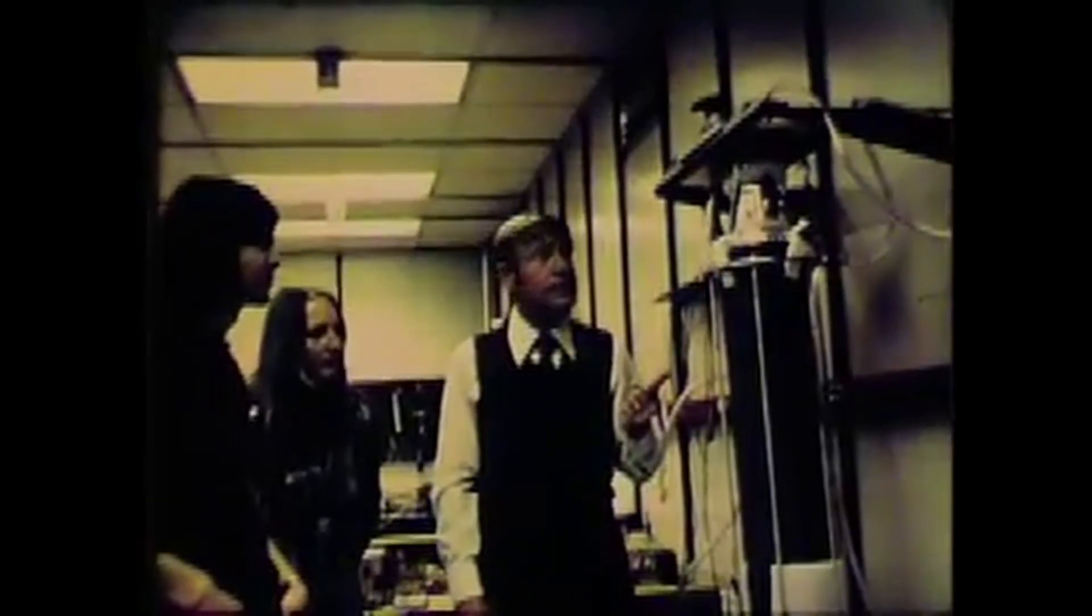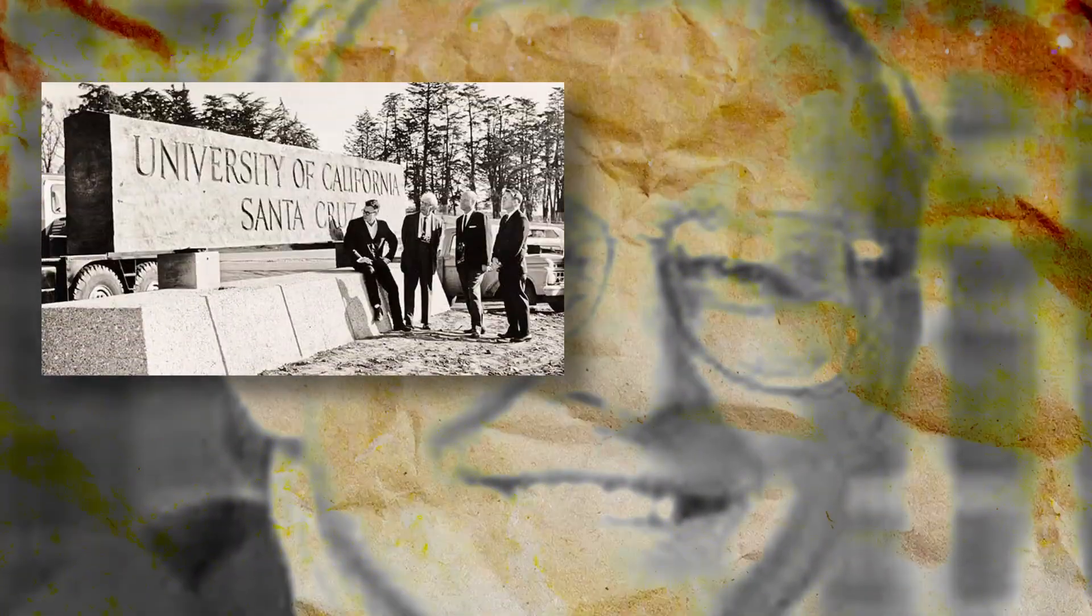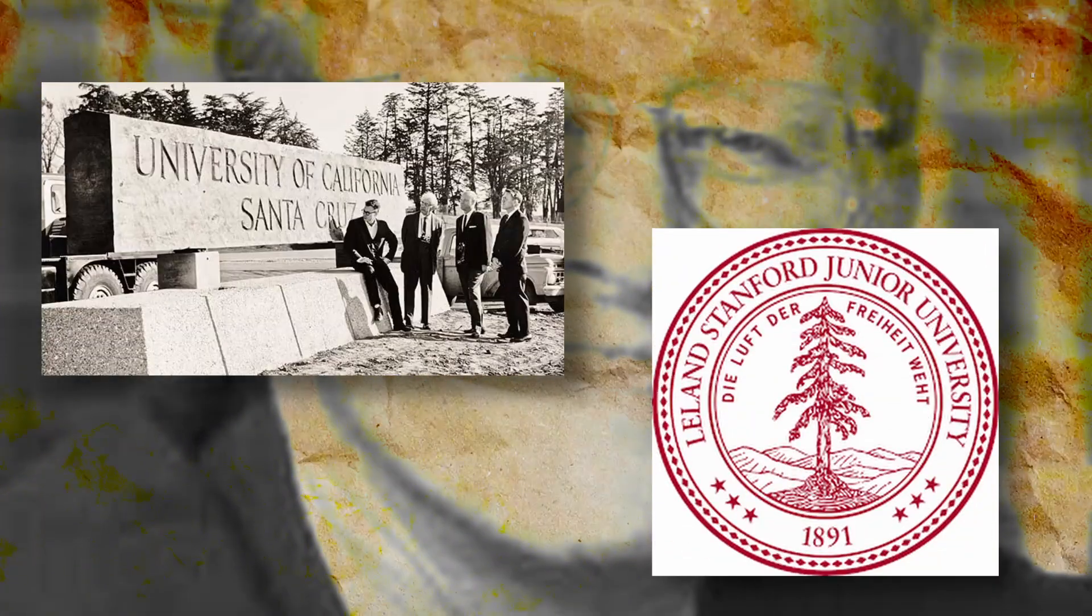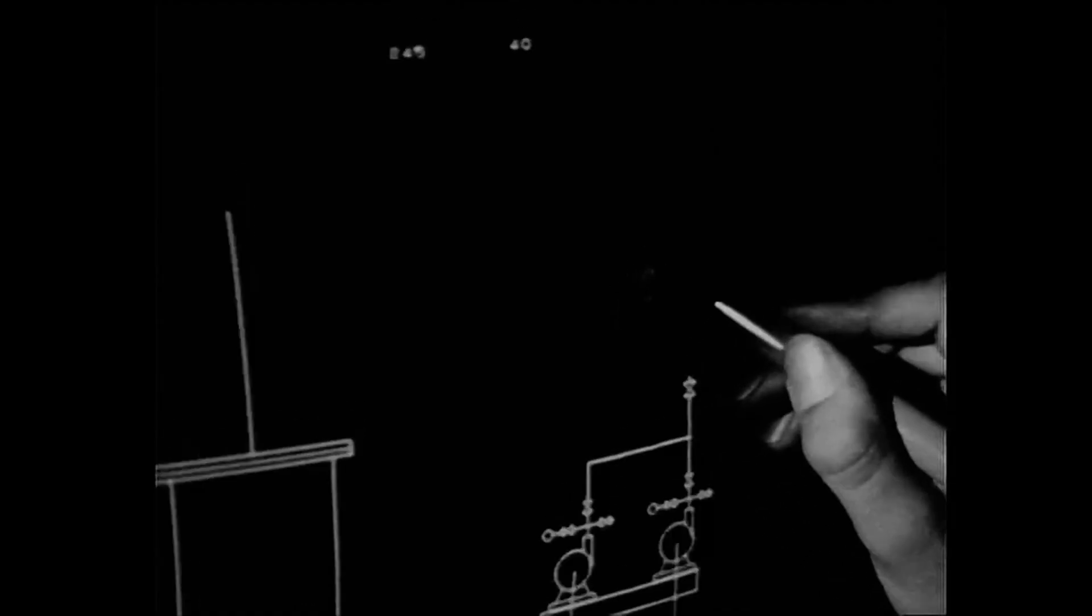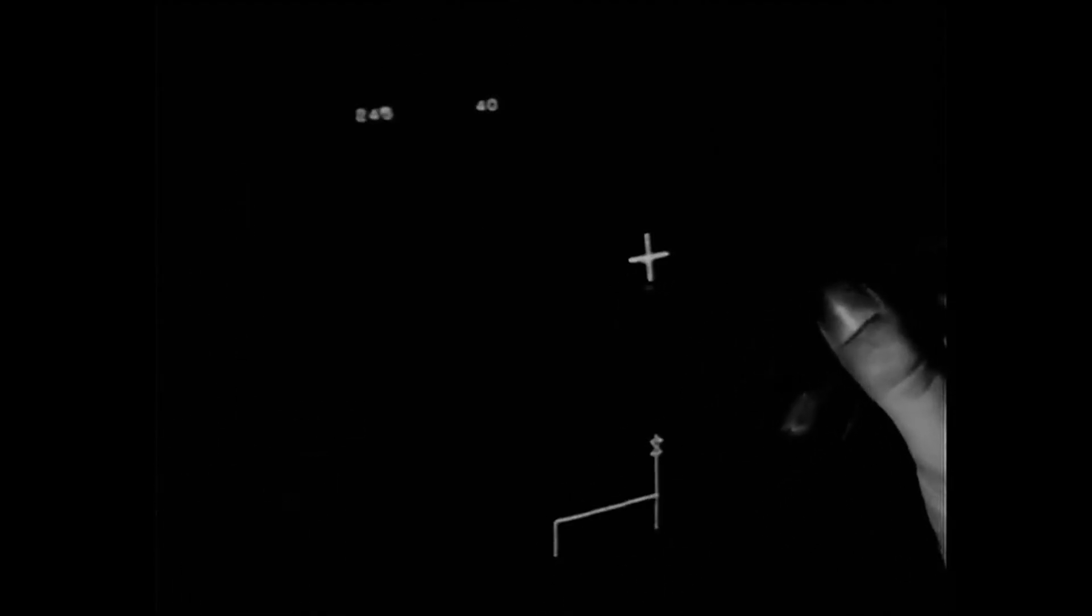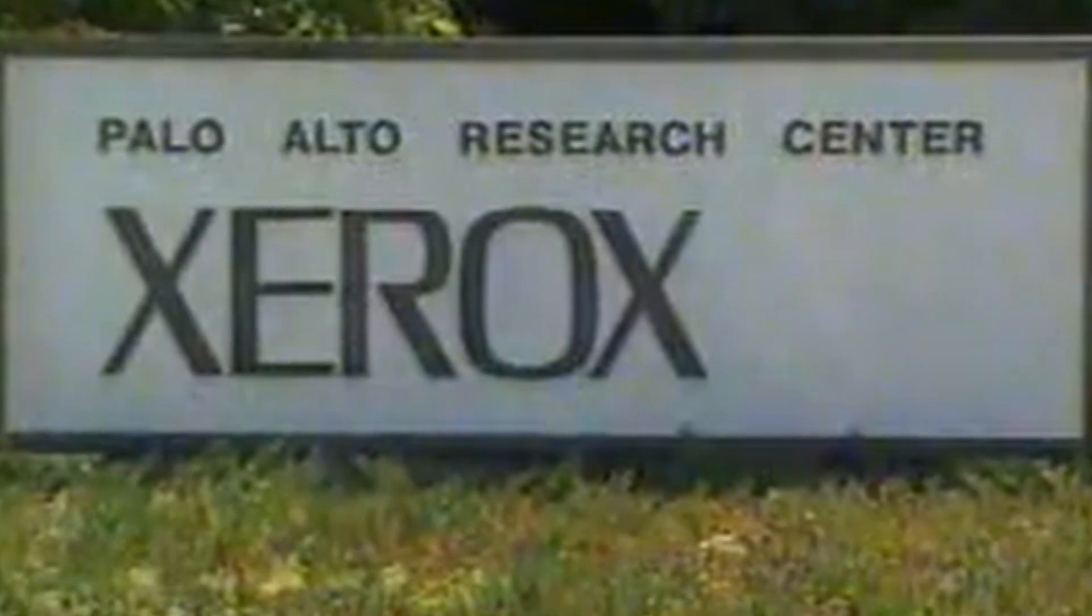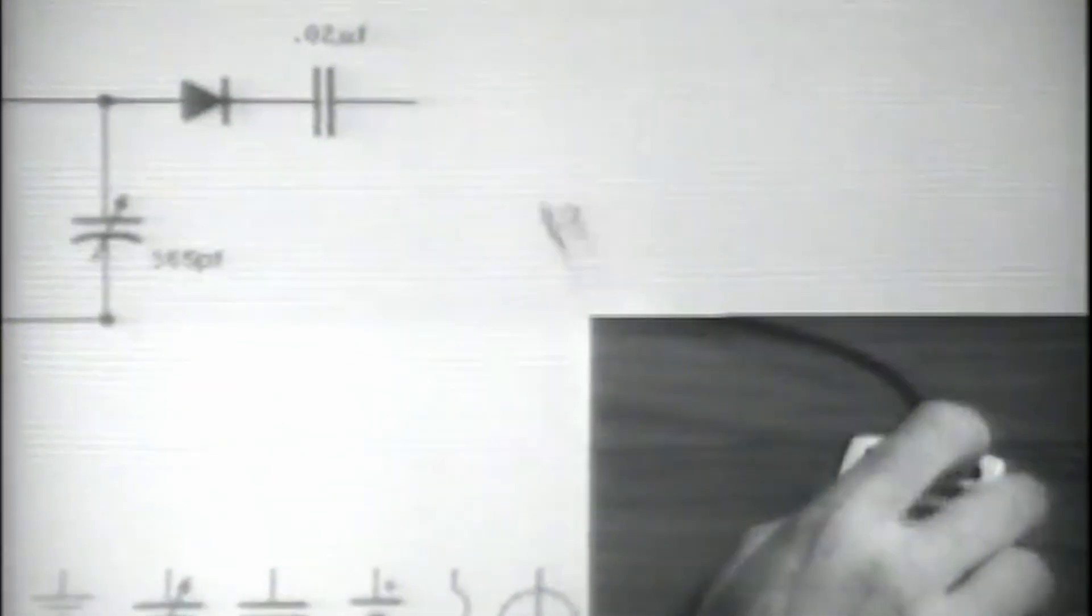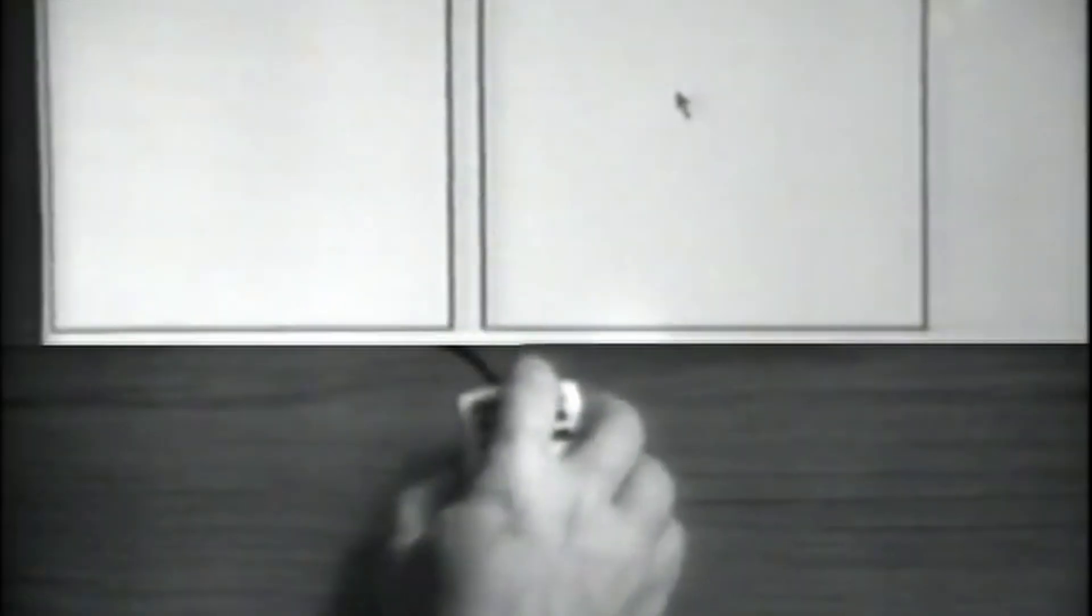At the time, the University of Utah was one of the pioneering centers of computer graphics research in the world. At Utah, Clark was exposed to emerging ideas in interactive computing and graphics hardware. Following his PhD, Clark soon transitioned into academic roles, first teaching at UC Santa Cruz before joining Stanford University's faculty in the late 1970s. At Stanford, he became increasingly immersed in cutting-edge work at the intersection of hardware design and computer graphics. His connections at Stanford linked him with researchers at the legendary Xerox PARC, one of the most influential hubs of computing innovation during the 1970s.